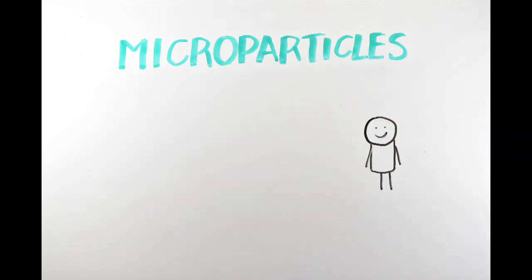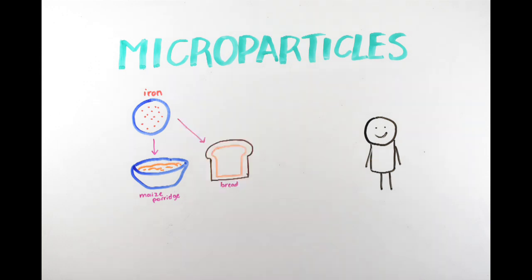The system was then translated into human studies using iron as the micronutrient of interest. The iron-loaded microparticles were loaded into maize porridge, a common staple in low-income countries, and baked into bread.